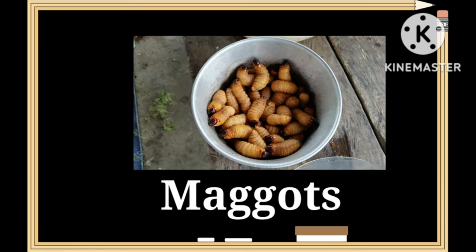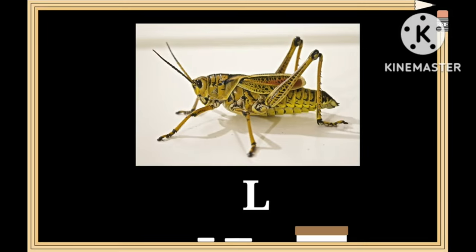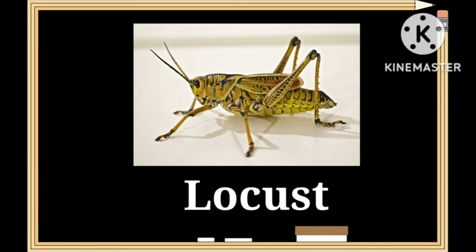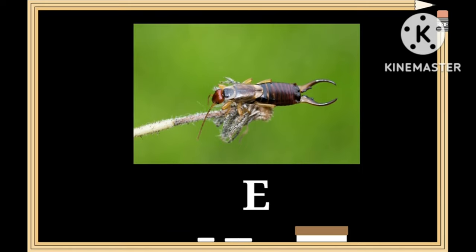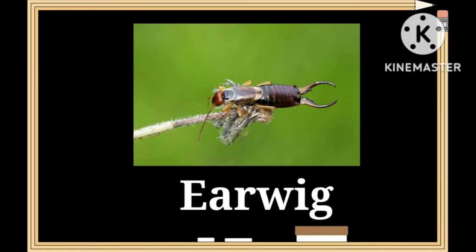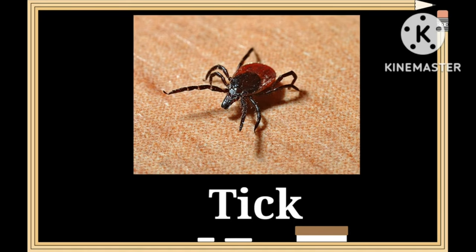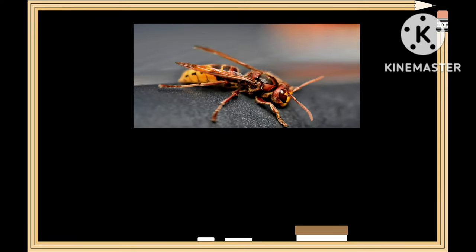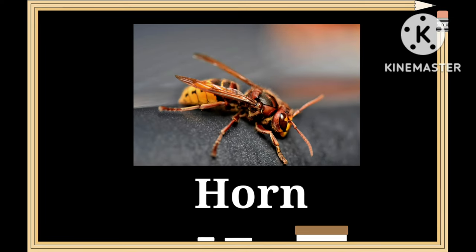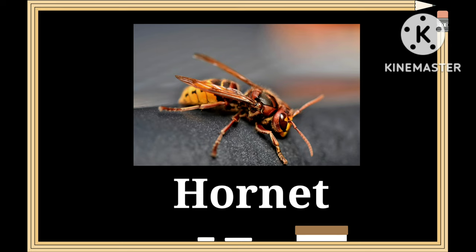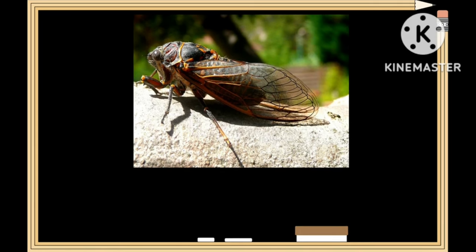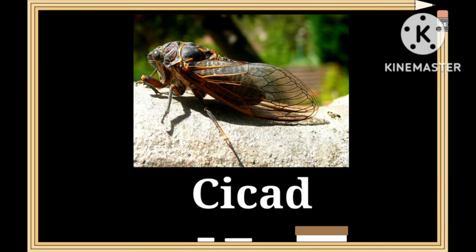These are maggots — M-A-G-G-O-T-S — maggots. This is a locust — L-O-C-U-S-T — locust. This is an earwig — E-A-R-W-I-G — earwig. This is a tick — T-I-C-K — tick.